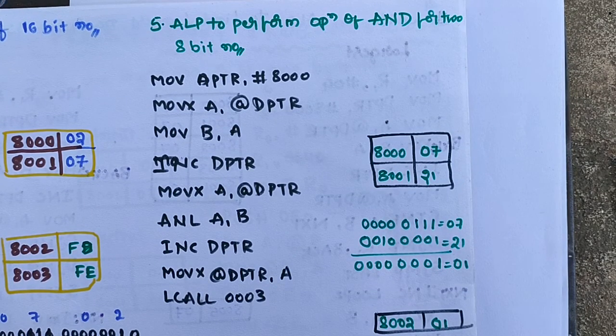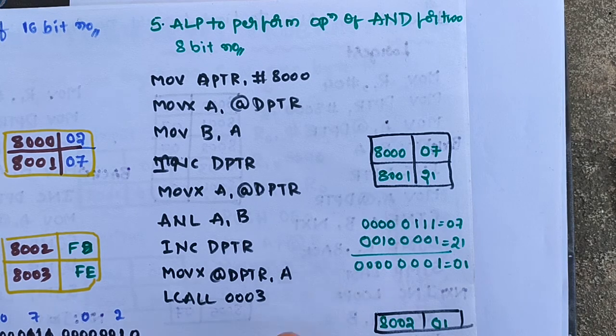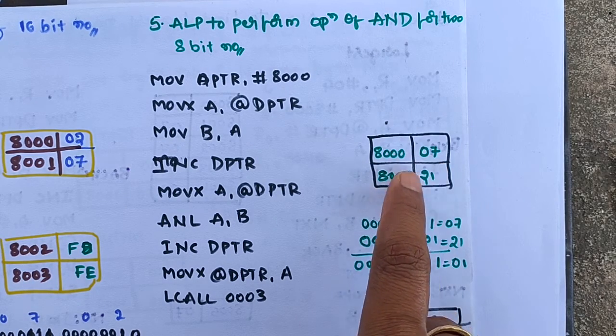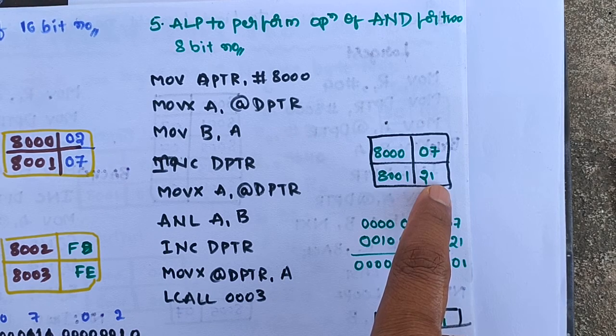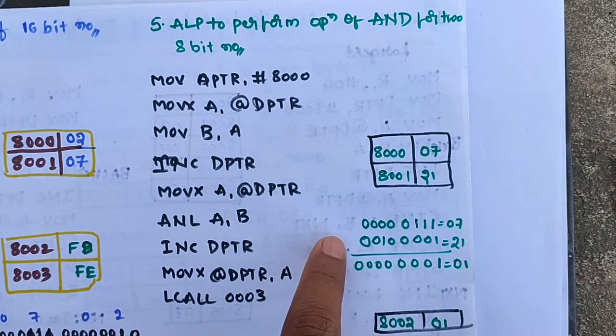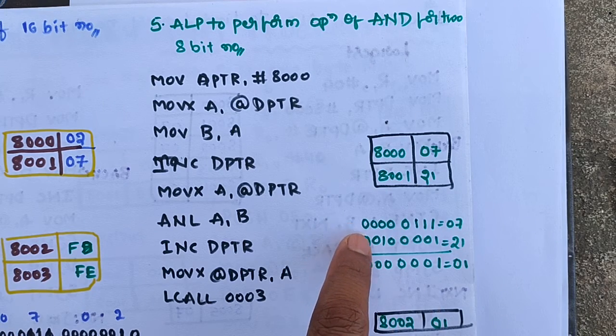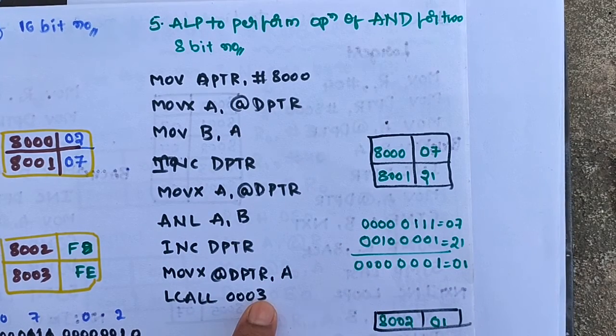To perform logical operations like AND, OR, and XOR, we can do this through a simple program. Here we have 2 bytes of data as input: at location 8000 we have 07, and at location 8001 I'm selecting 21 hexadecimal value. I am performing the AND operation in this program.